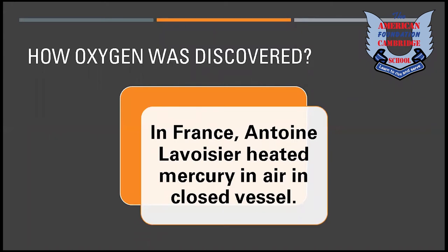In France, Antoine Lavoisier took their work further. He heated mercury in an air-enclosed vessel. It turned into a red powder and about one fifth of the air was used up. This was the same no matter how much mercury he started with or how much he heated — the amount remained the same.